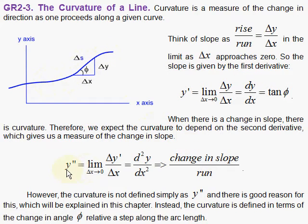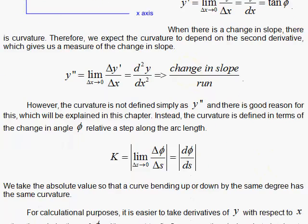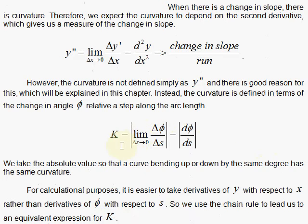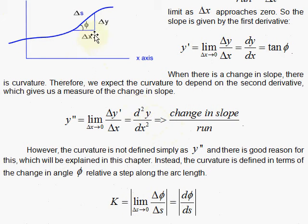So you might ask, why not use the second derivative, the change in the slope with respect to x, as the curvature definition? Well, there's a good reason not to do that. In your calculus book, you define the curvature as the limit here, as delta x goes to 0. Think of this little delta x going to 0, sliding this triangle down, really small. And you're looking at the ratio here, delta phi, that angle with respect to the arc length delta s.